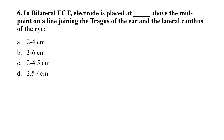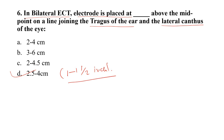Question number six: In bilateral ECT, the electrode is placed at what distance above the midpoint on a line joining the tragus of the ear and the lateral canthus of the eye? Option A: 2 to 4 cm. Option B: 3 to 6 cm. Option C: 2 to 4.5 cm. Option D: 2.5 to 4 cm. The correct option is option D — 2.5 to 4 cm, or 1 to 1.5 inches above the midpoint on that line.